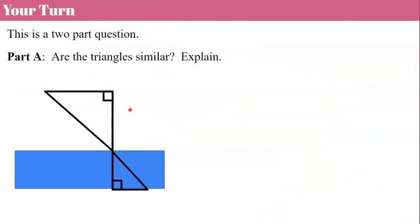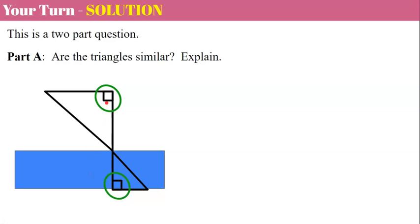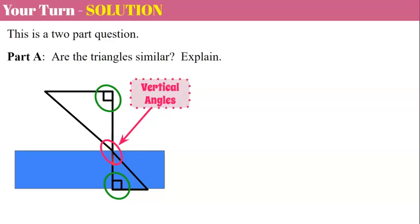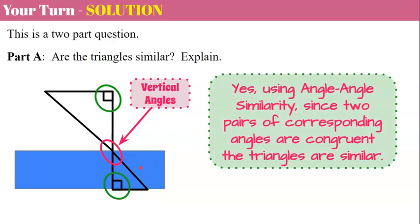Now it's your turn. We're going to answer a two-part question. In part A, determine if these triangles are similar and explain your work. Welcome back. We're using angle-angle similarity. One pair of corresponding angles are both 90 degrees. For the second pair, these are intersecting line segments forming vertical angles, and vertical angles are congruent. Therefore, since two pairs of corresponding angles are congruent, these triangles are similar by angle-angle similarity.